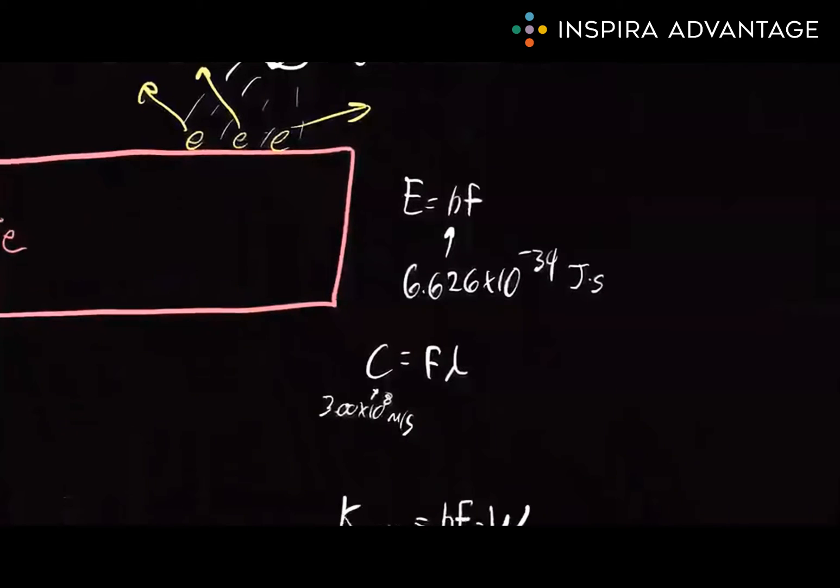But what if you have the wavelength of light and you want to find its frequency? Well, that's where the wave equation comes in: C equals F lambda. Here, C is the speed of light, which is roughly 3 times 10 to the 8th meters per second. F is the frequency, and lambda is the wavelength. With this equation, we can interchangeably work with either frequency or wavelength. Very useful for the MCAT.